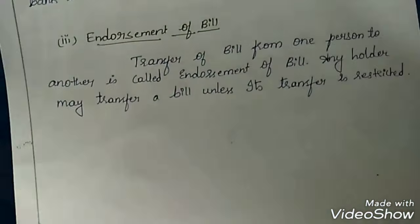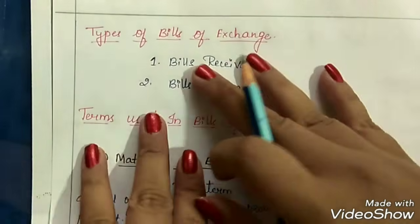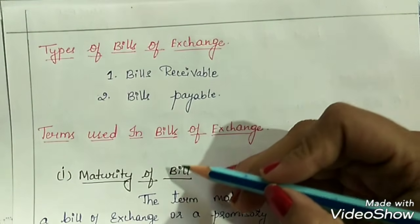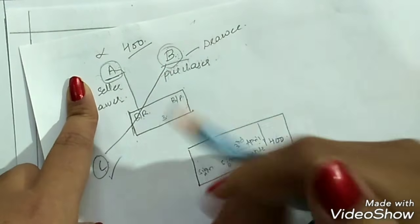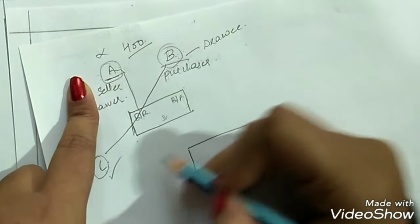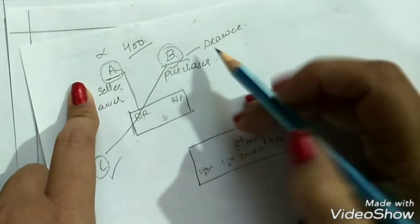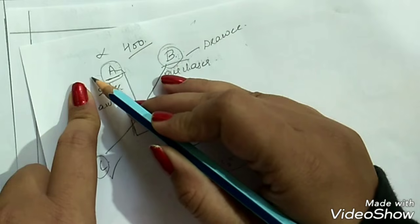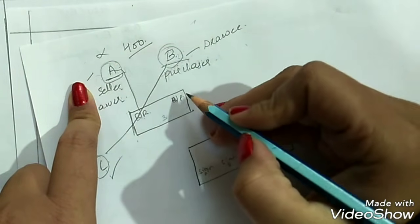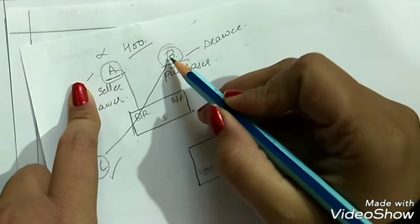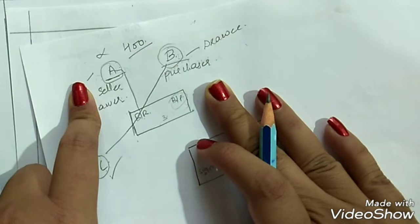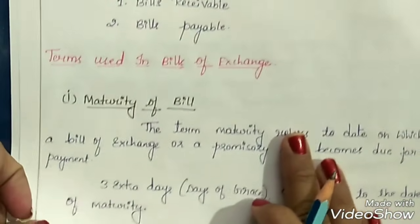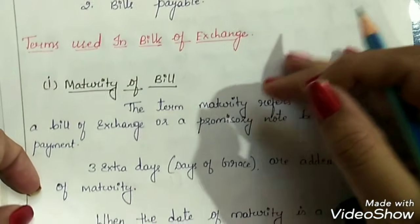These are the five contents of a bill of exchange. Next, the types: there are two types — bills receivable and bills payable. For the person who draws the bill, it is bills receivable; for the person who has to pay the amount, it is bills payable. Bills receivable is an asset for A or the seller/drawer, while bills payable is a liability for the drawee or purchaser.